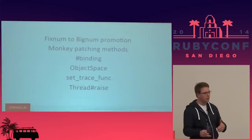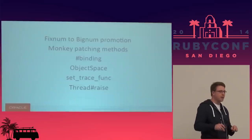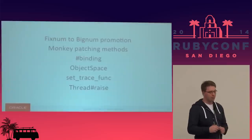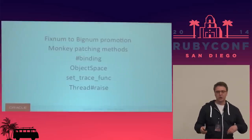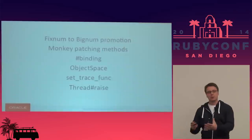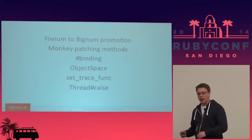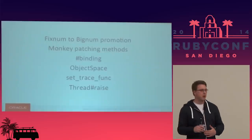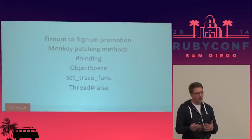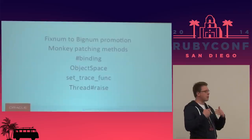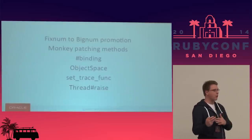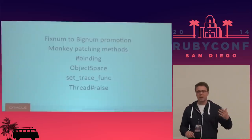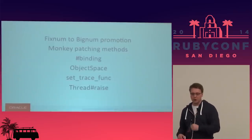Binding — kernel binding and proc binding — are frequently listed as the most hard to implement in Ruby. Kernel binding allows you to get an object representing your local variables so you can manipulate it like a Ruby object. Proc binding does that for a proc, block, or lambda. They make it very tricky to optimize because a Ruby implementation can't store local variables on the stack like C would, since you're always able to get and modify them as a Ruby object.